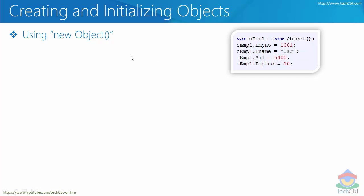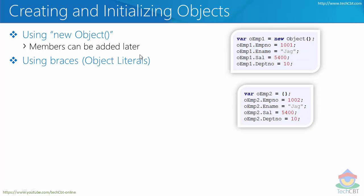This approach means members are added later — while creating the object you do not specify its structure; instead you add all the properties and methods after instantiating the object.